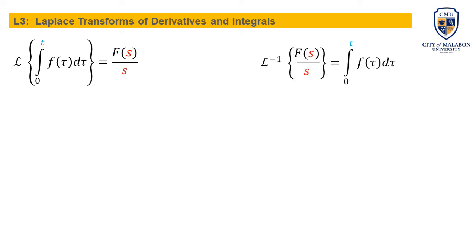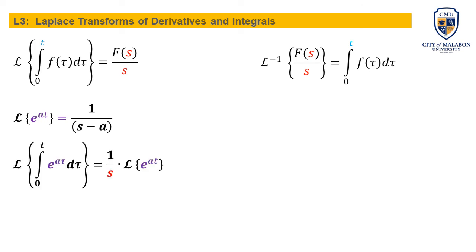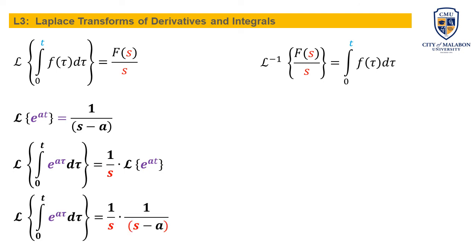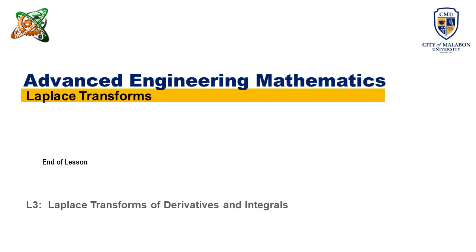For the forward direction: we know the Laplace transform of e to the at is 1 over s minus a. Therefore the Laplace transform of the integral from zero to t of e to the a tau d tau equals 1 over s times the Laplace transform of e to the at, which gives 1 over s times 1 over s minus a.